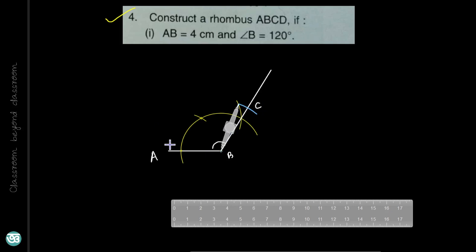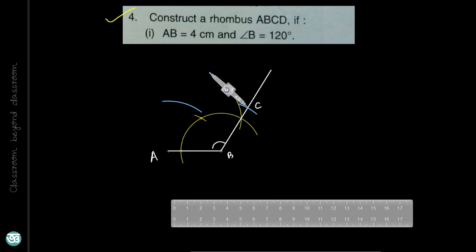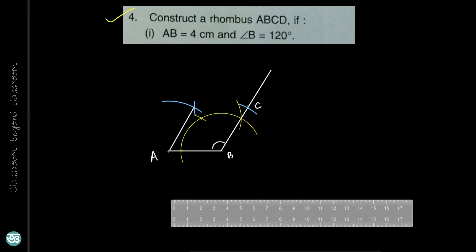Now take the same radius with A as center to draw another arc. Then with C as center, draw another arc to cut the first arc. Join the points to locate point D. So ABCD is the required rhombus.